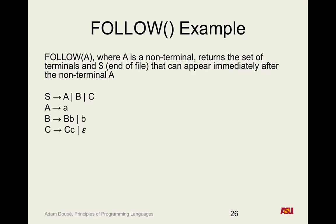We're going to go back to the simple example we've used before. We're going to look at it, think about why some of these follow sets are what they are, and how that makes sense intuitively. Then we're going to go over the rules and the mechanical algorithm to compute follow sets. So here we have our grammar: S goes to big A, big B, big C. A goes to little a. B goes to big A, little b, or just B. C goes to big C, little c, or epsilon.